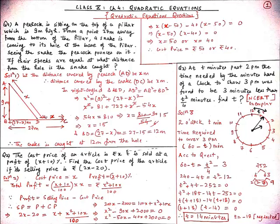Our third question — which is an NCERT exemplary question — is: at T minutes past 2 PM, the time needed by the minute hand of a clock to show 3 PM was found to be 3 minutes less than T²/4 minutes. Find the value of T. The time in the clock is 2 o'clock and T minutes. The total time between 2 PM and 3 PM is 60 minutes, so the time required to reach 3 PM equals (60 − T) minutes. According to the question: 60 − T = T²/4 − 3.